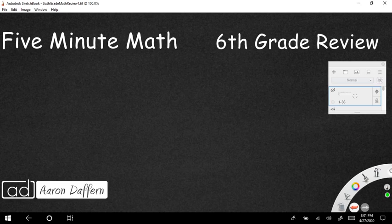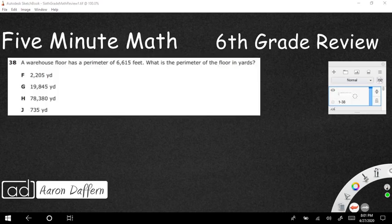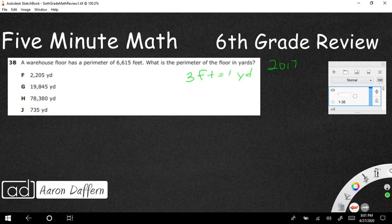We are looking at the perimeter of the floor in yards. This is number 38 on the 2017 math star and this is actually very simple. All we need to know is that three feet equals one yard and that's something that we've been working with since third grade. It's on the mathematics chart.